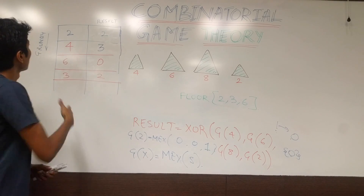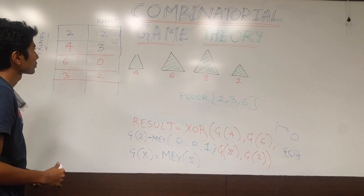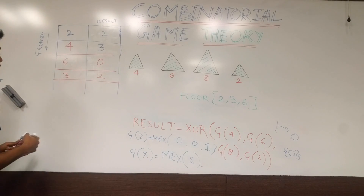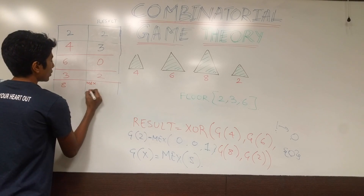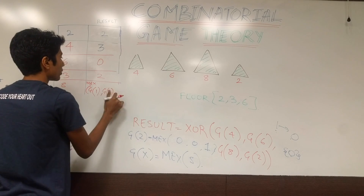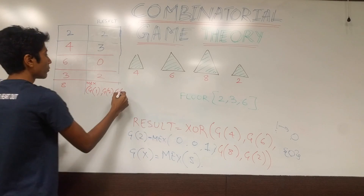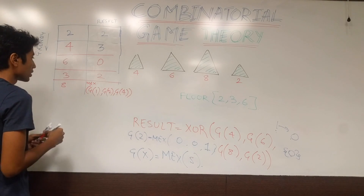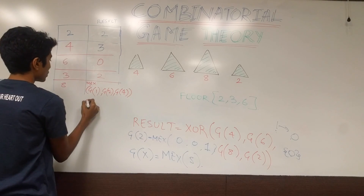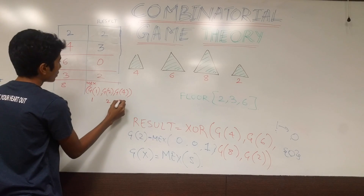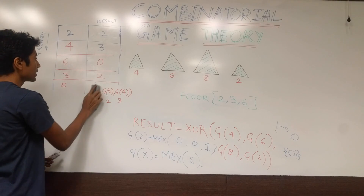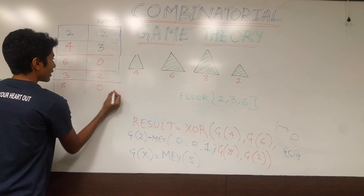Now for Grundy(8): floor(8/6)=1, floor(8/3)=2, floor(8/2)=4. So mex of {Grundy(1), Grundy(2), Grundy(4)} = mex of {1, 2, 3}. The smallest non-negative integer not in {1, 2, 3} is 0. So Grundy(8) = 0.